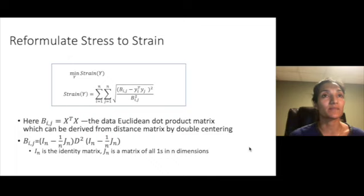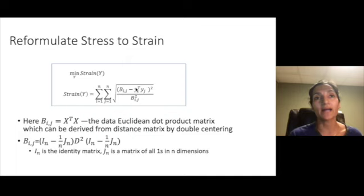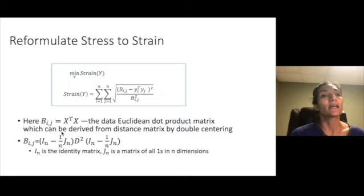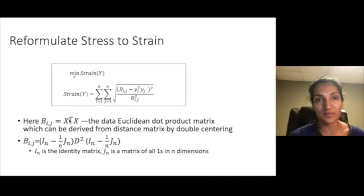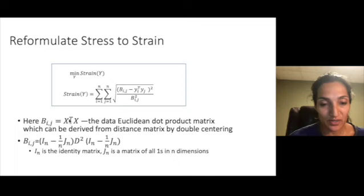So in order to do that we reformulate this criteria from stress to a quantity called strain. The strain quantity is just measuring the difference between given inner products and the inner products of your new data coordinates. And here this relies on the fact that we have these inner products from the original data or coordinate space. But what if we don't have that? What if we only had the distance matrices?